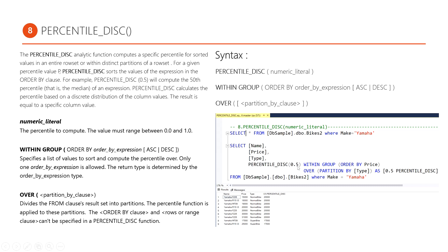So 0.5 means 50 percent of the price value, and 0.6 means 60 percent of the price value. After that we use the WITHIN GROUP keyword, which we apply on two analytical functions in SQL Server: PERCENTILE_DISC and PERCENTILE_CONT. We apply an ORDER BY clause on the price column. After that we use the OVER keyword, and within its parenthesis we apply the PARTITION BY clause.